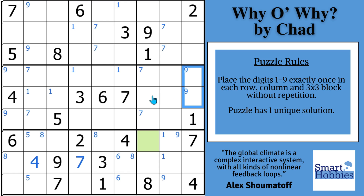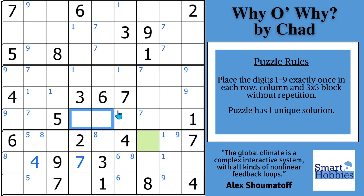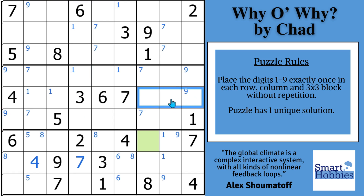What you'll notice is we can actually do a solve here. The nines are restricted to rows four and six in block four, and also restricted to rows four and six in block five. Whenever you see that situation — kind of like a mini X-Wing — the nine has to be somewhere in row five, so it can only be over in block six. The only place a nine can go in row five and block six is this cell, so this actually has to be your nine.